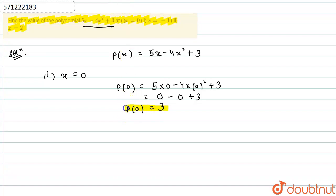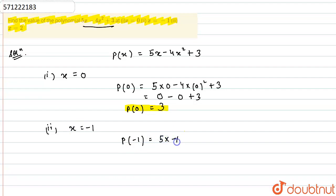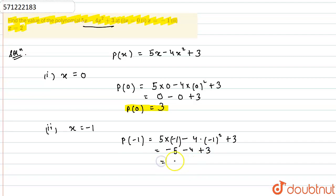Similarly, we find the value at x equals minus one. So p(minus one) equals five multiplied by minus one, minus four multiplied by minus one whole squared, plus three. This becomes minus five minus four plus three, and finally we get p(minus one) equals minus six.